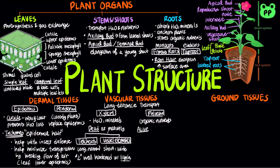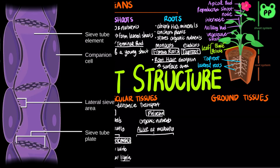On the other hand, the sugar-conducting cells of the phloem are alive at maturity. Nutrients are transported through sieve tubes, which consist of chains of cells called sieve tube elements. Though alive, sieve tube elements lack a nucleus and most other organelles, which enables nutrients to pass more easily through the cell. The end walls between sieve tube elements consist of sieve plates, which have pores that facilitate the flow of fluid from cell to cell.